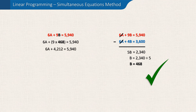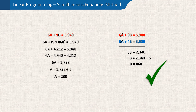We have 6A plus 4212 equals 5940. By deducting 4212 from both sides we arrive at 6A equals 1728. And finally, by dividing both sides of the equation by 6, we can establish that A — the number of alphas to produce — is 288.